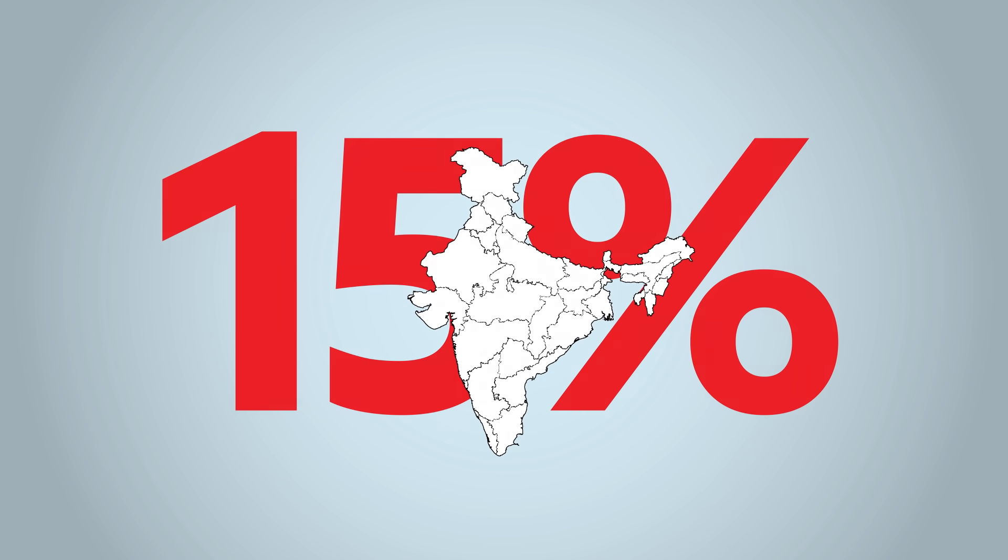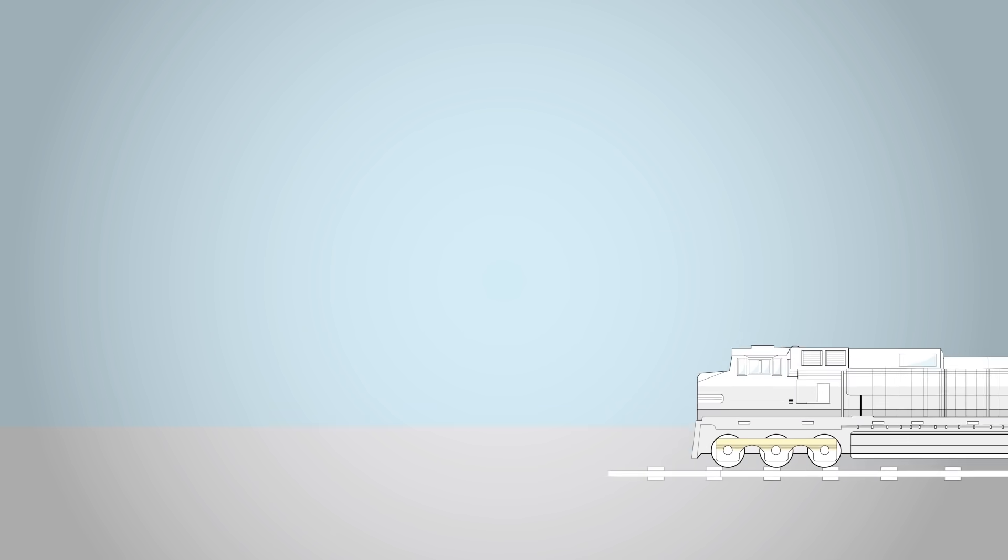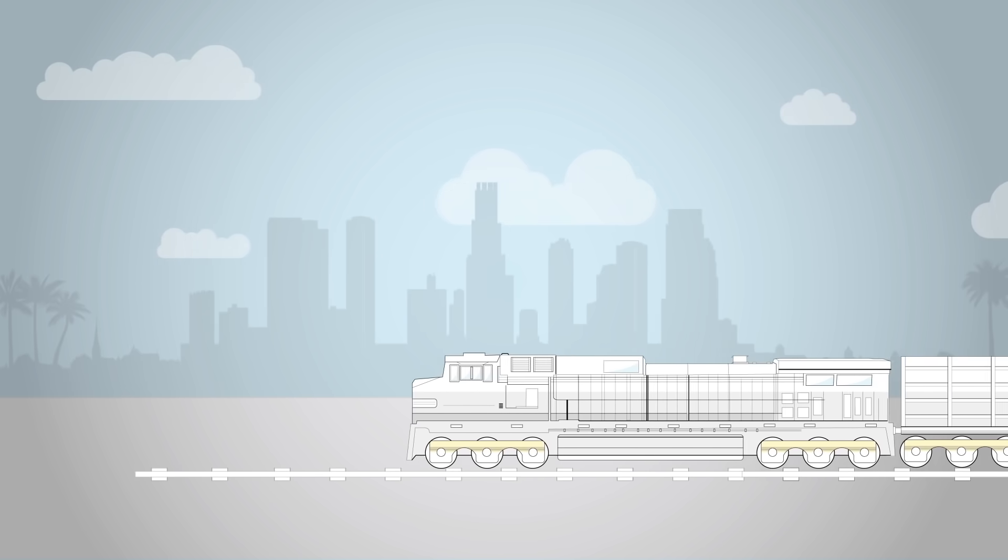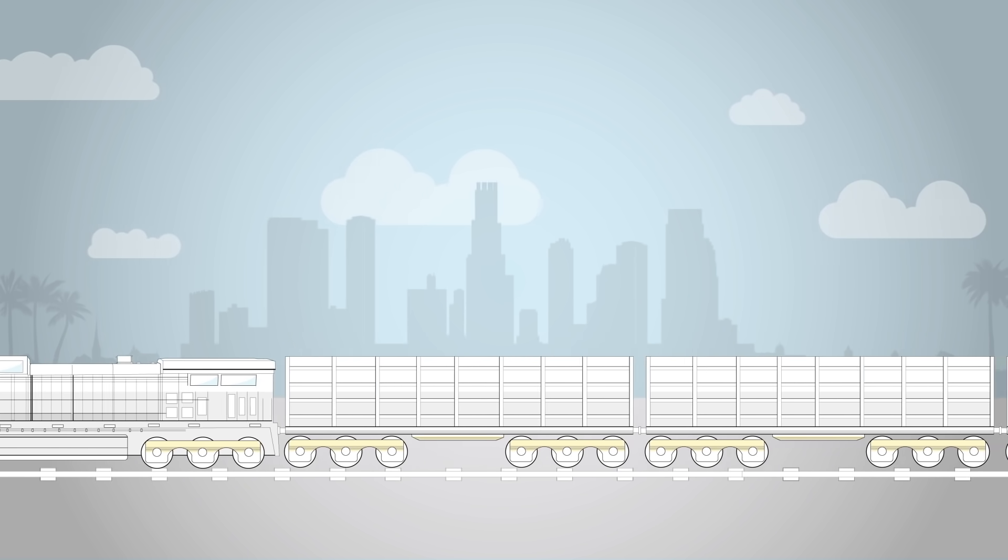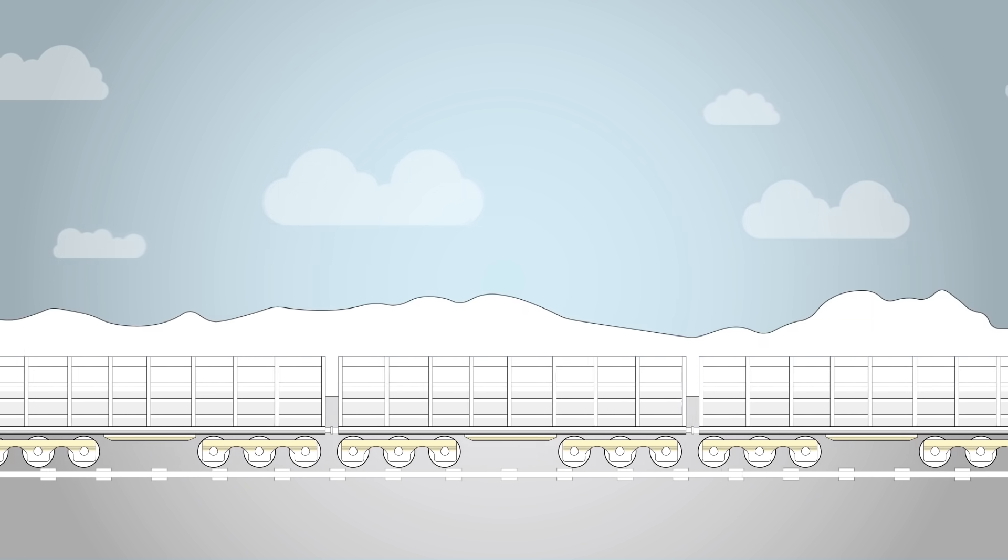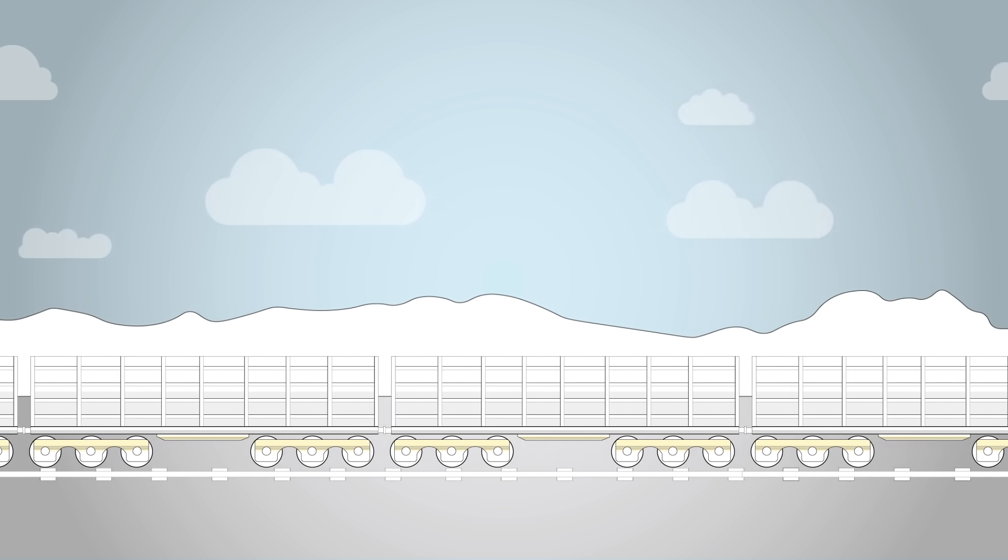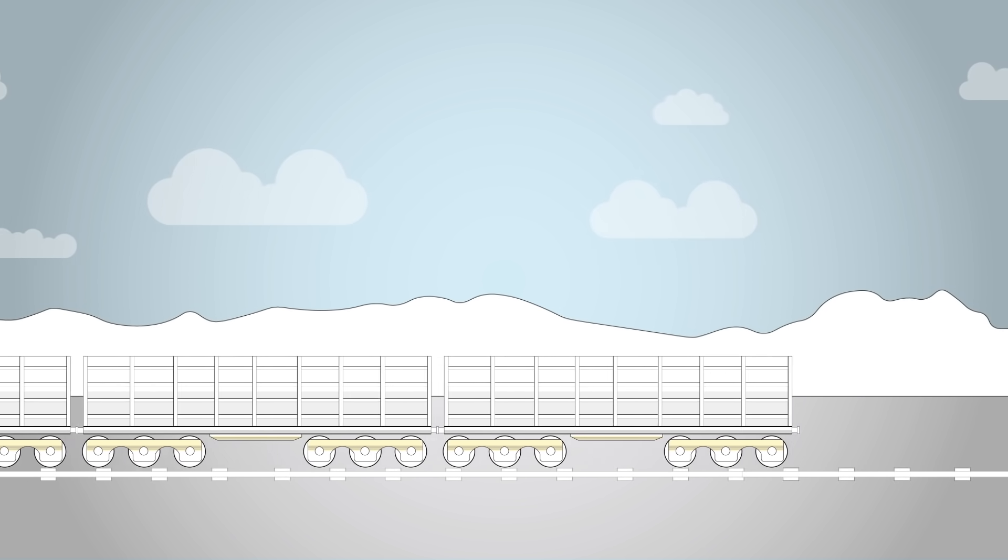Natural gas is also making inroads on railroads. In the U.S., a local railway company in Florida operates an all-LNG locomotive fleet. And in Russia, one of the world's northernmost railways plans to deploy LNG-powered locomotives.